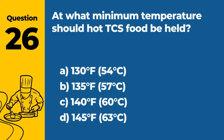Question 45: What is the minimum internal cooking temperature for eggs that will be served immediately? A. 145°F (63°C). B. 155°F (68°C). C. 165°F (74°C). D. 135°F (57°C). Answer: A. 145°F (63°C). The minimum internal cooking temperature for eggs that will be served immediately is 145°F (63°C).